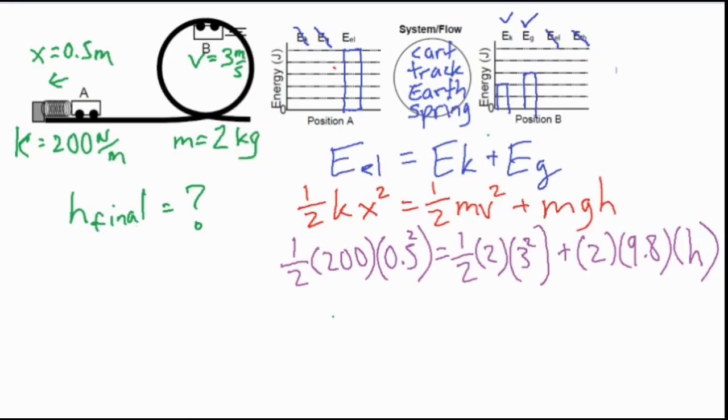All right. So we have all of our values plugged in there. So we can go ahead and take one half times 200 times 0.5 squared. That comes out 225. And then we have one half times 2, which is 1, times 3 squared, which is 9. So this comes out to 9. And the unit is joules. And then plus 2 times 9.8, which is 19.6.